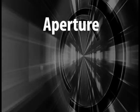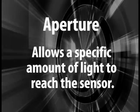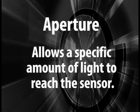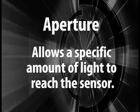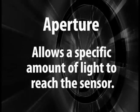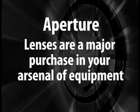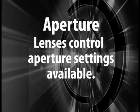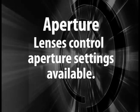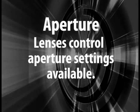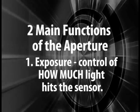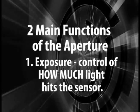Let's take a look at how aperture affects the recording of your image. Your aperture is actually an opening in your lens that allows a specific amount of light to reach your sensor in your camera. Lenses are going to be a major purchase in your equipment. Your lens actually controls your aperture settings available — the lens controls it, not the camera itself.